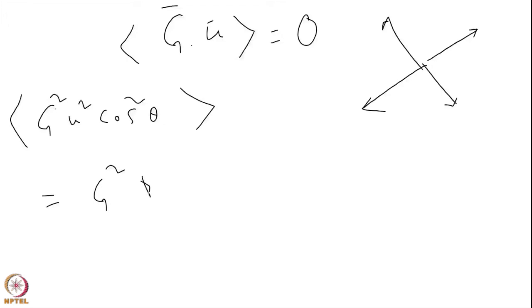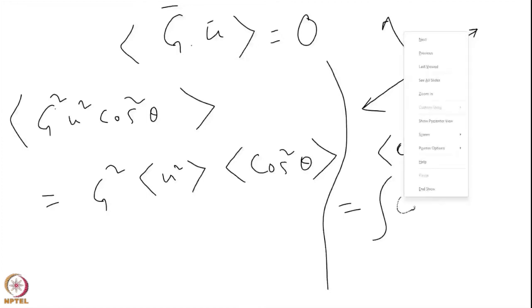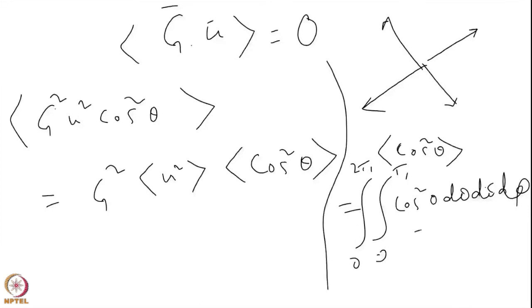In G square u square, I have G square u square cos square theta, average of that. It becomes G square with no averaging, u square, and over a sphere I need to find out the average of cos square theta. Some of you must have done it, that average of cos square theta equals the integral from 0 to pi and 0 to 2 pi of cos square theta sin theta d theta d phi over a sphere. You may check that it will come out to be 1/3.